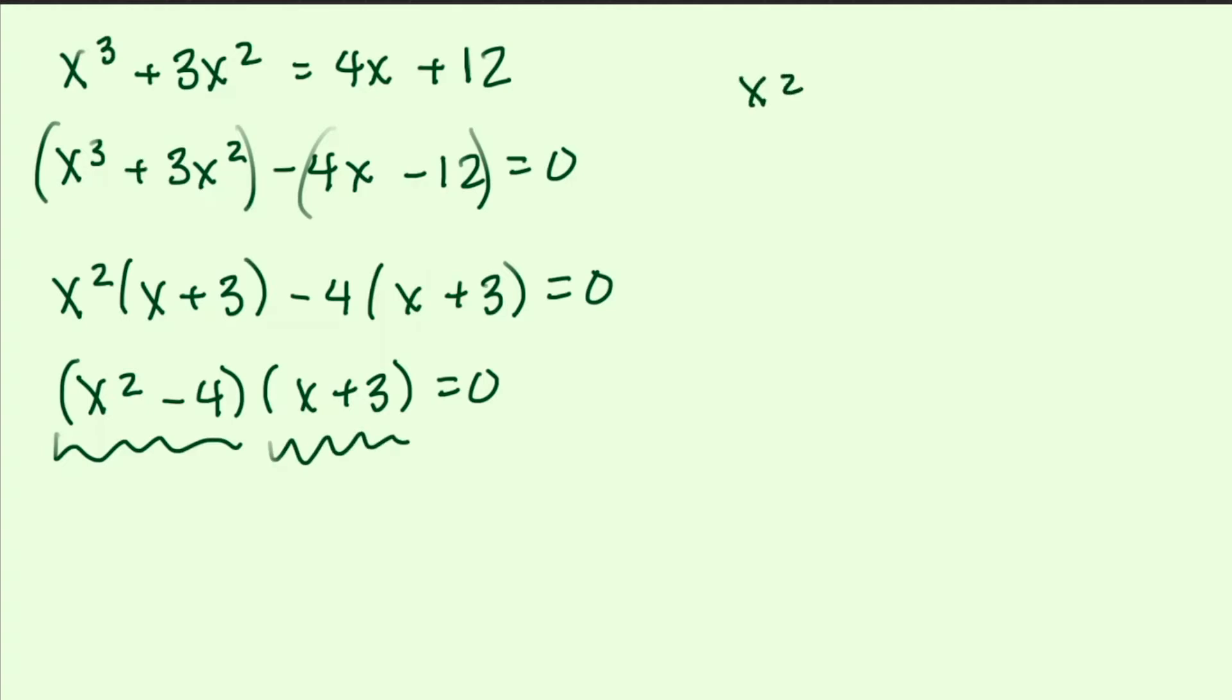So we can set x squared minus 4 equal to zero. We get x squared equals 4. x equals root 4 equals plus or minus 2.